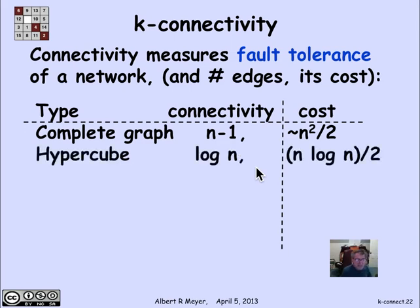The hypercube, now if we're going to be talking about graphs of size n to be uniform, the hypercube Hn has 2 to the n vertices. If we want an n-vertex version, we're talking about H sub log n, which has n vertices. And then it has about n log n over 2 edges. So it's got fewer edges than the complete graph, but significantly less, exponentially less connectivity.